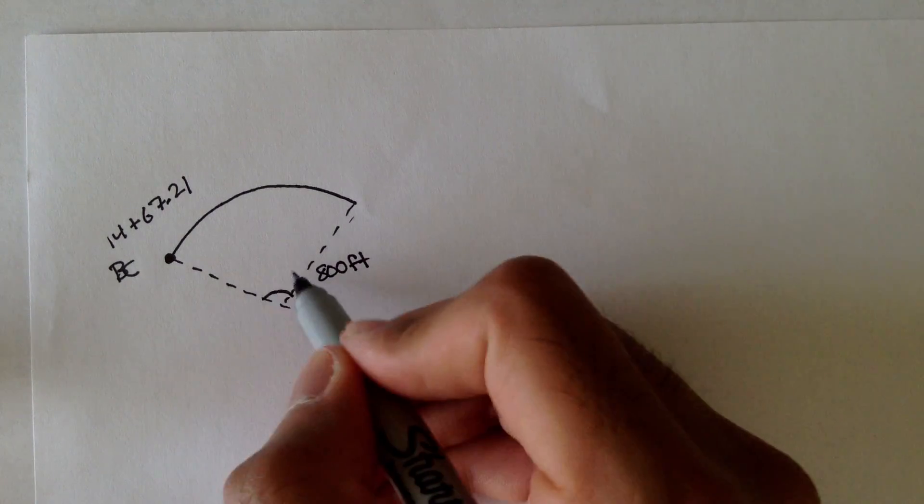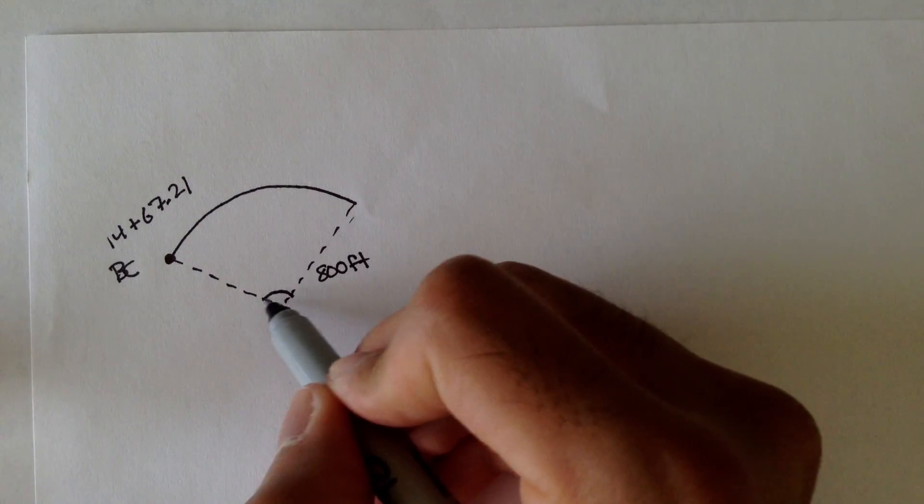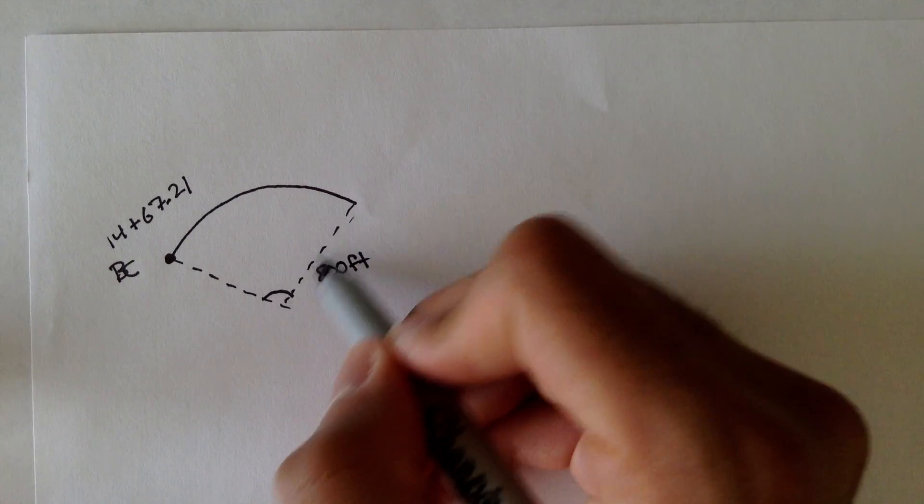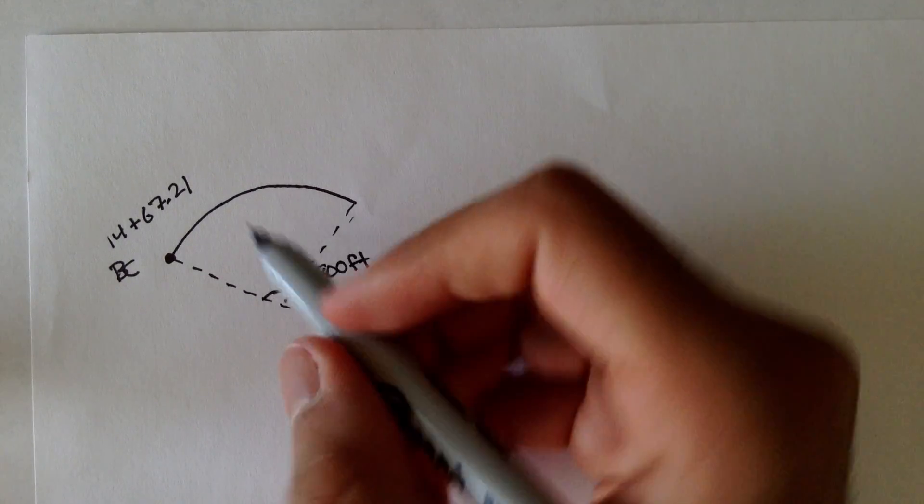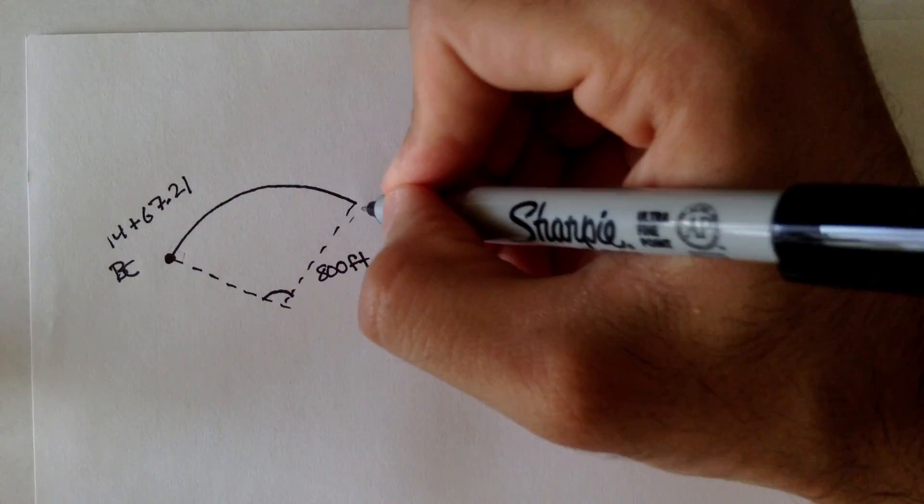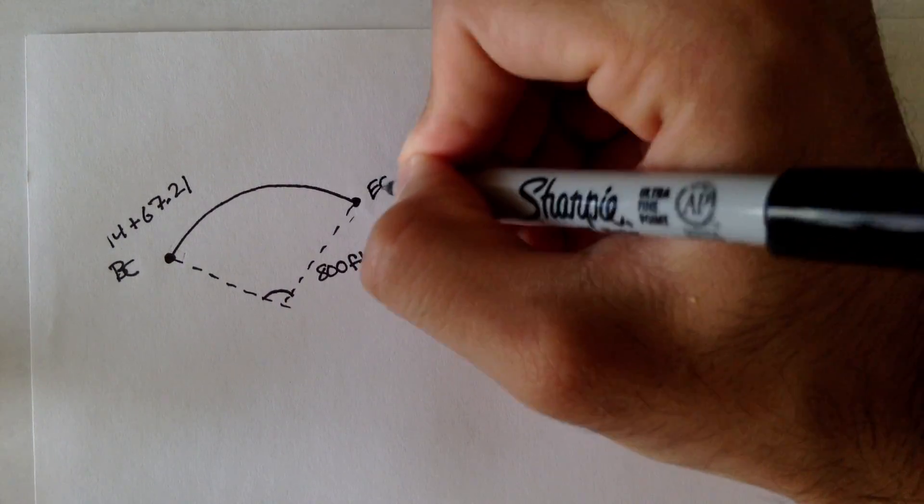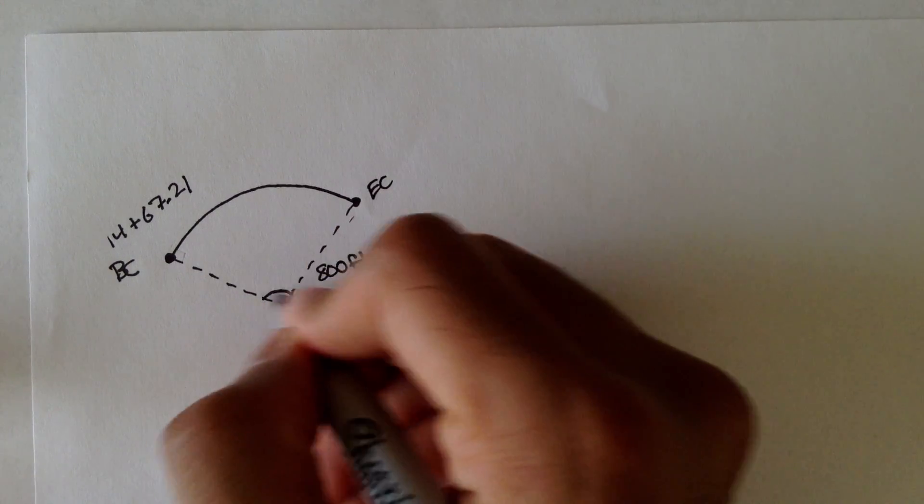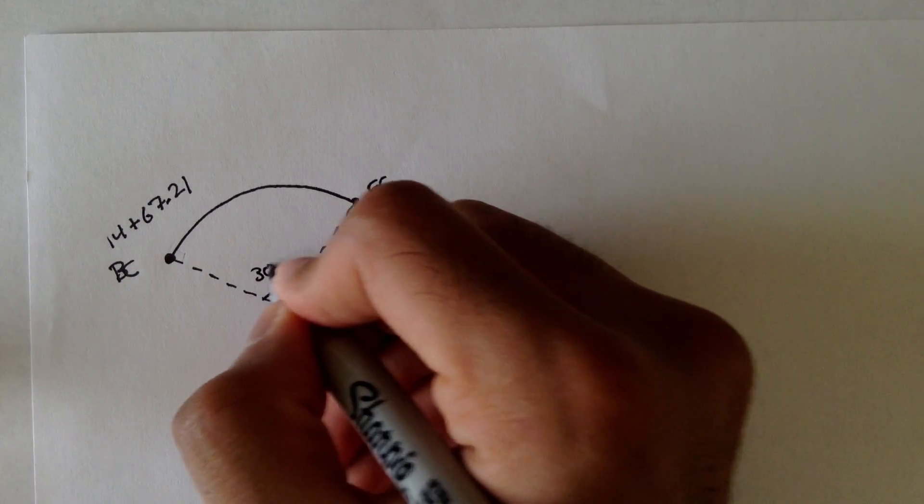And the interior angle, remember the interior angle is the angle that's created by these two lines, and these two lines are perpendicular to the tangent line of BC and of EC. So this angle here, the interior angle, is 30 degrees.